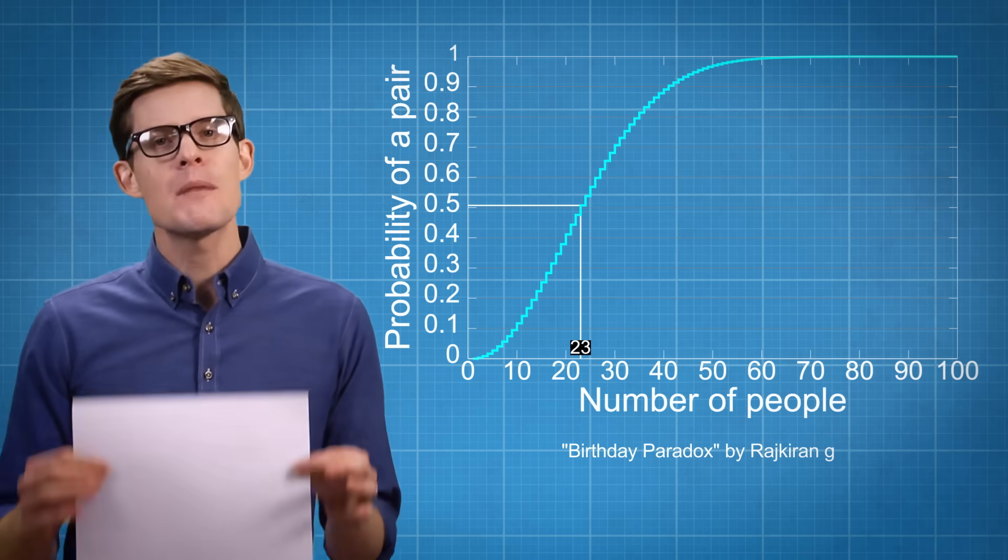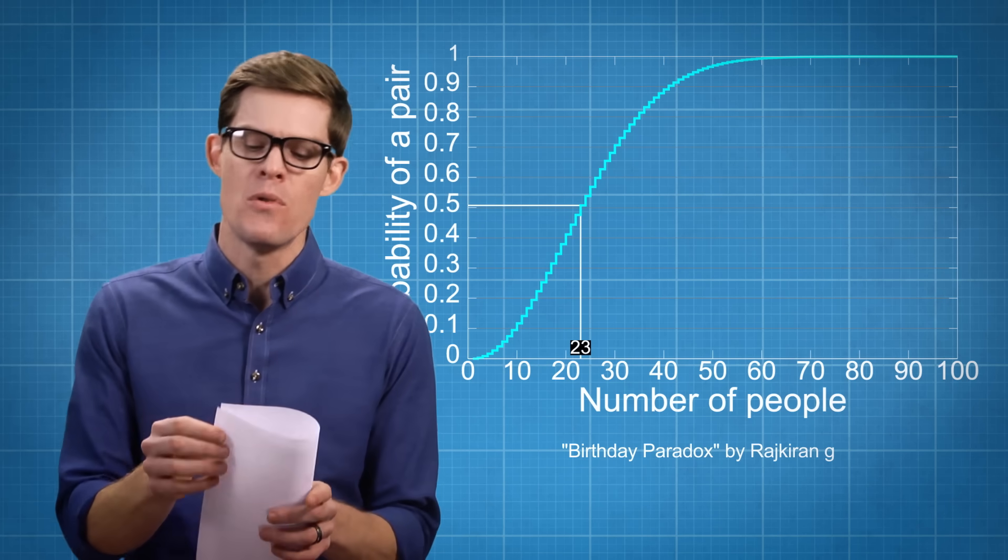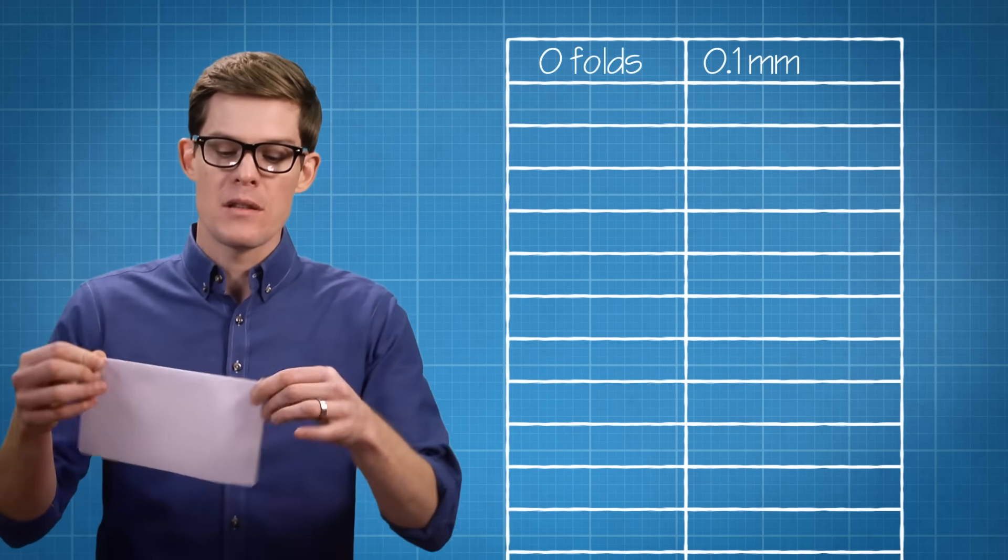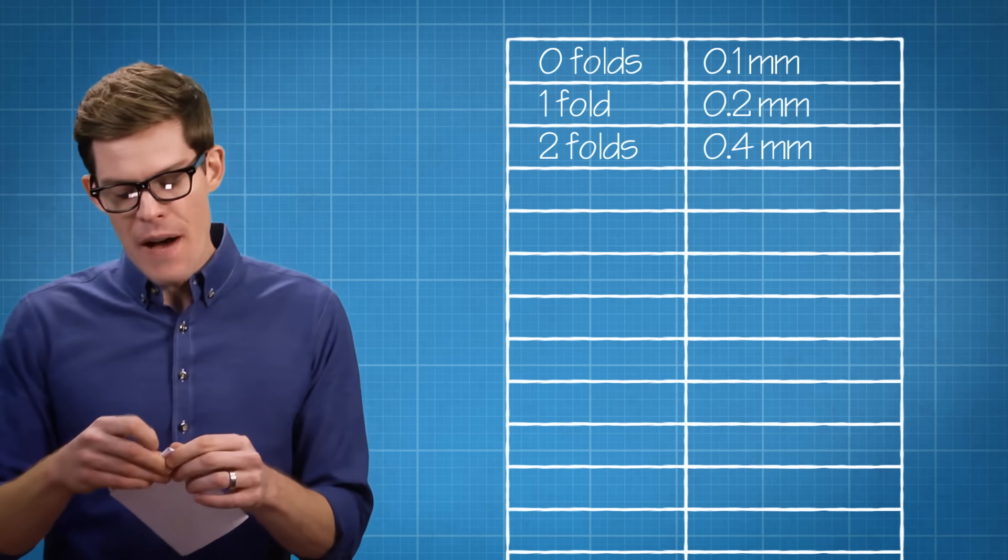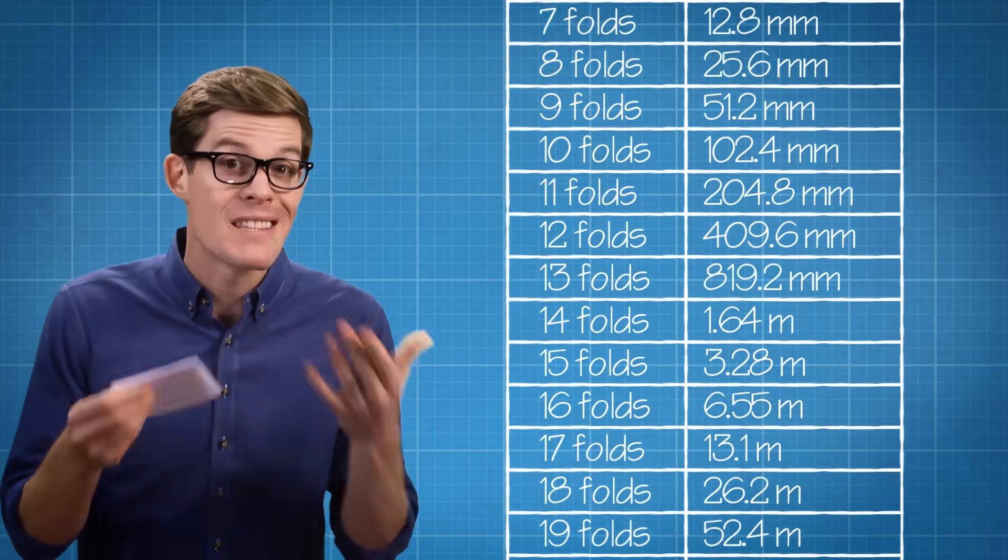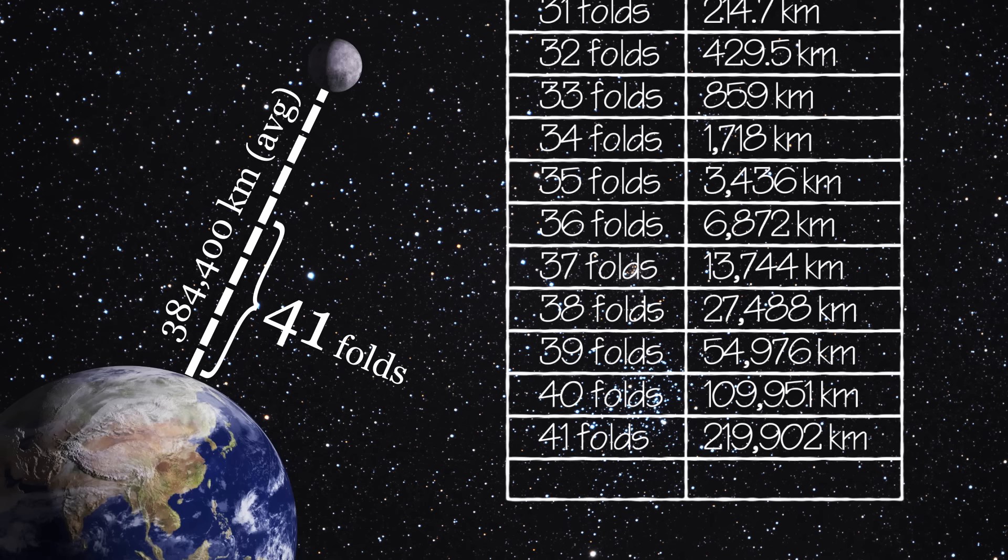For example, how many times do you think you'd have to fold a piece of paper in half before its stacked height reached the moon? Well, we fold it once, two sheets. Fold it again, we have four where we once had one. Now, if I could keep folding this piece of paper indefinitely, by 41 folds we'd reach over halfway to the moon.